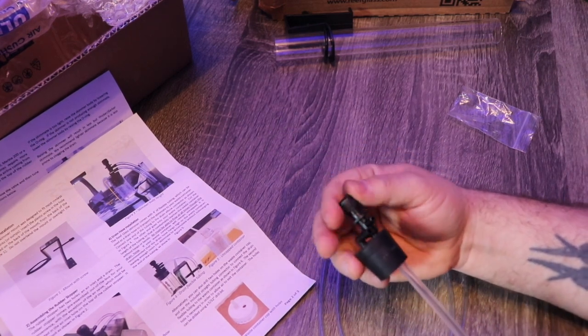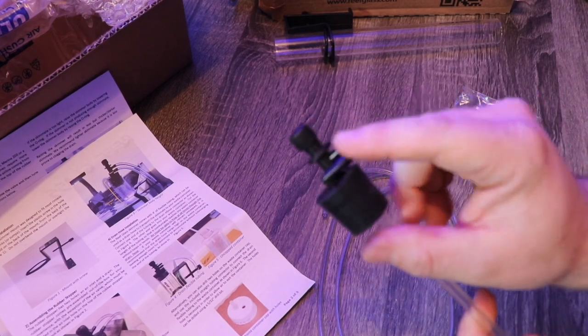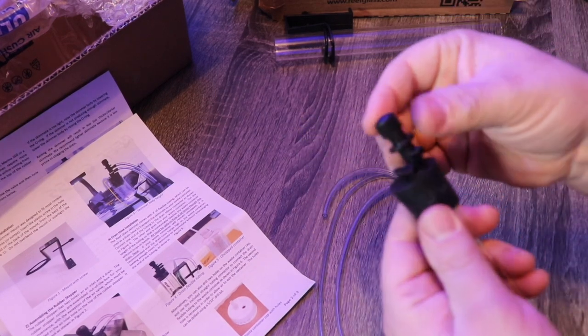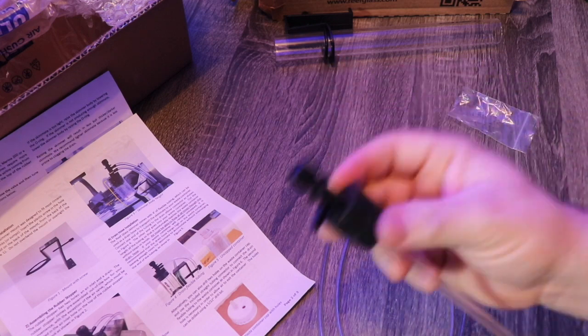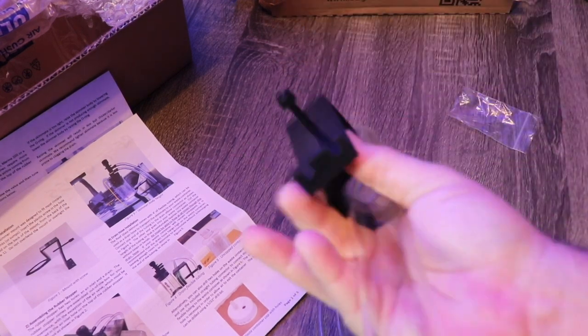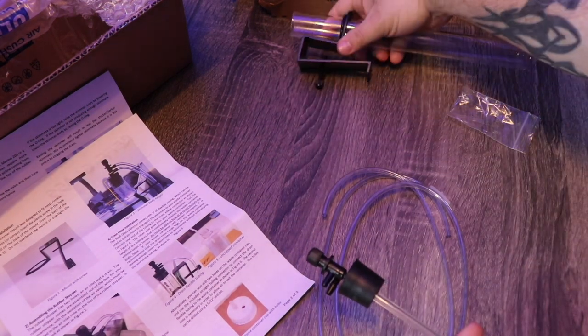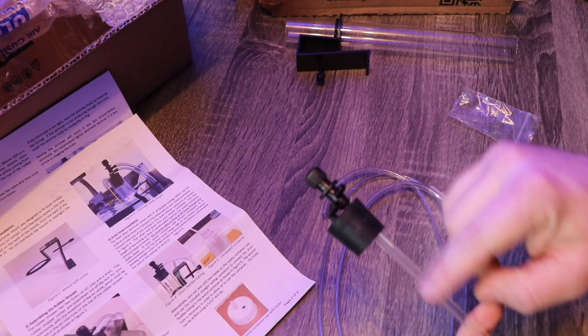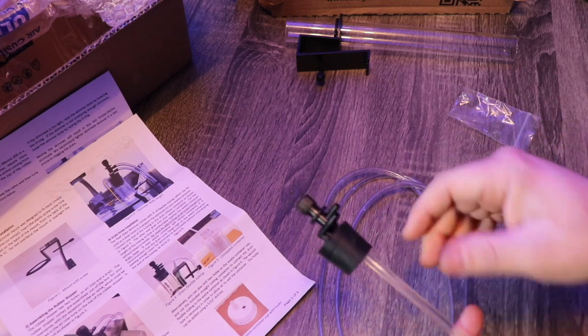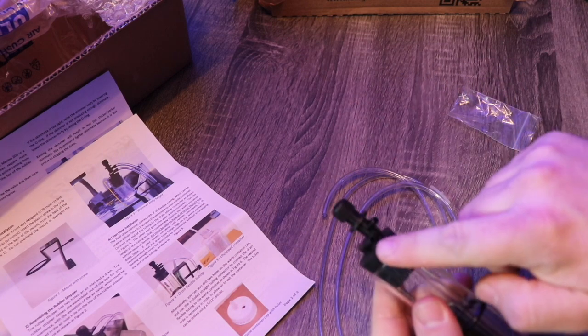This other elbow that's coming out here—both of these are going to be pointing towards the back so you can utilize those airline tube organizers right there on the mounting bracket. As your foam is pushed up back into the protein skimmer tube, skimmate is going to come out of this elbow right here.